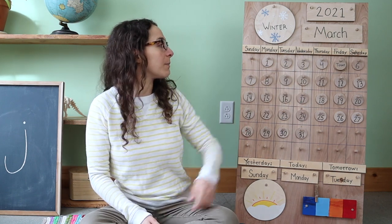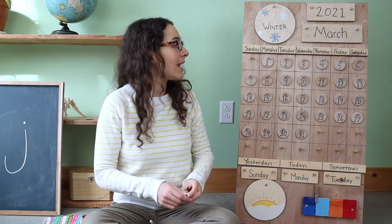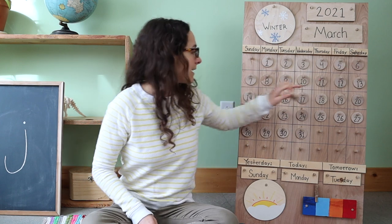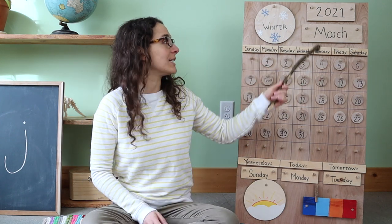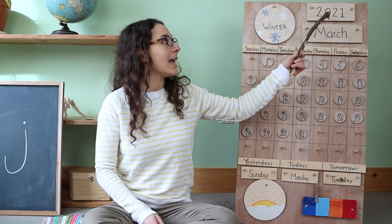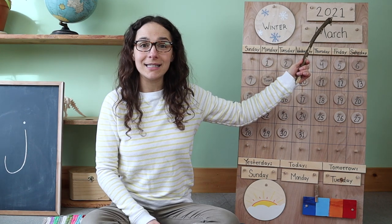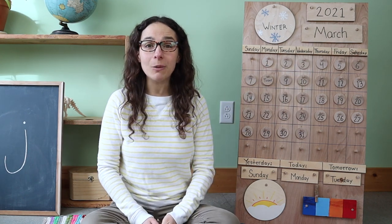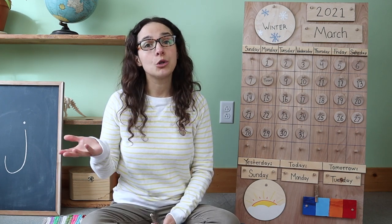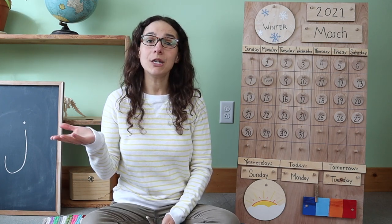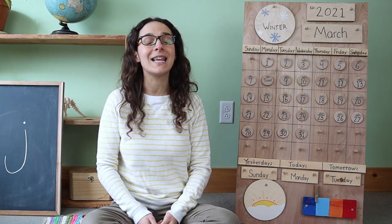Today is March 8th. So let's move the chip from the 5th — the last time that we met was March 5th. We'll go 6, 7, and today is March 8th. Right up here we have the year. Do you know what the year is? 2021. That's right, friends. You can also say 2021 — both are correct ways of saying the year.